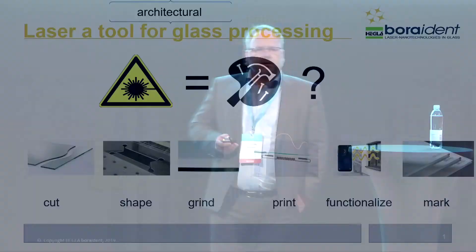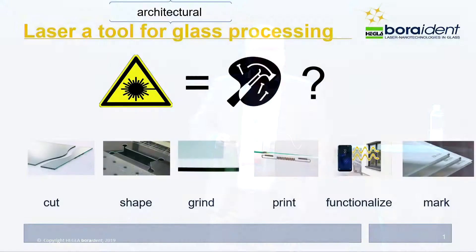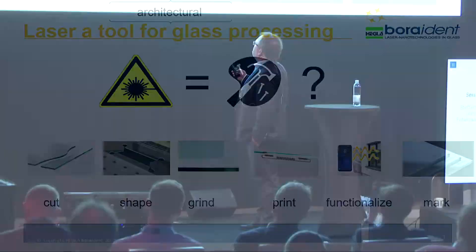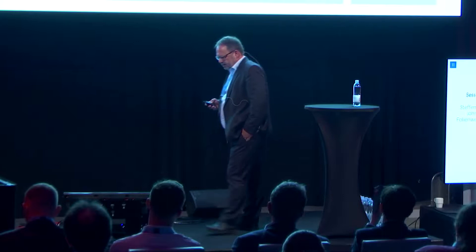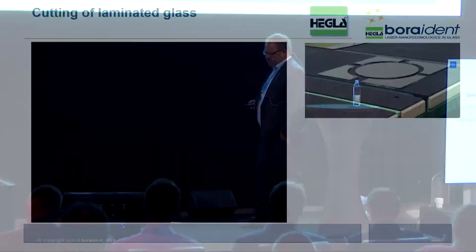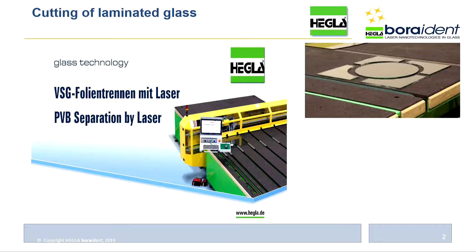I will start with the cutting process of laminated glass. The problem when cutting laminated glass is that there is a PVB interlayer between the two glass plates, and the challenge is how to cut this PVB. The company Hekla found a very smart and clever solution: destroy the PVB before the mechanical cutting.